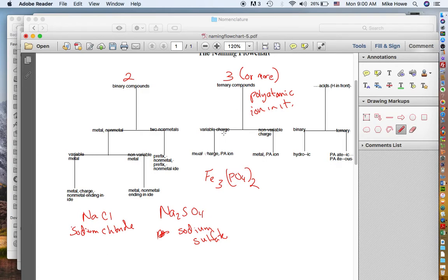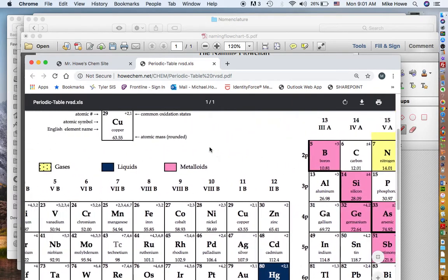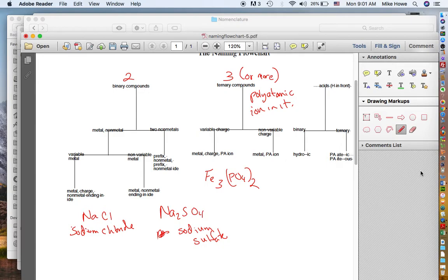So does iron vary? And the answer to that is yes. And you know that again by going back to your periodic table and look at iron. And iron's right here. It's got a 3 and a 2. So iron is a variable metal.